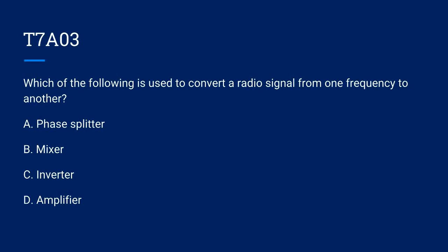T7A03. Which of the following is used to convert a radio signal from one frequency to another? A. Phase Splitter. B. Mixer. C. Inverter. Or D. Amplifier. The correct answer is B. Mixer.